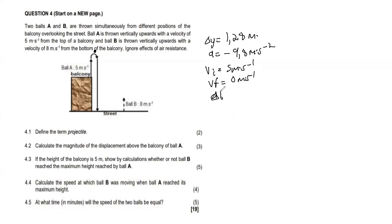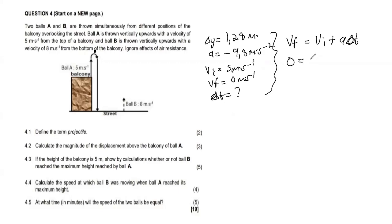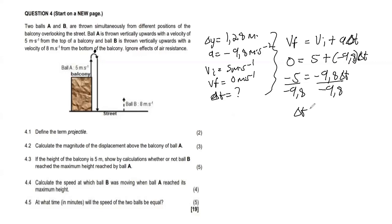We have three formulas with delta T; choose the simplest one: VF = VI + A·ΔT. Substituting: 0 = 5 + (−9.8)·ΔT. This gives negative 5 = negative 9.8·ΔT. Dividing both sides by negative 9.8, our delta T = 5 divided by 9.8 = 0.51 seconds.